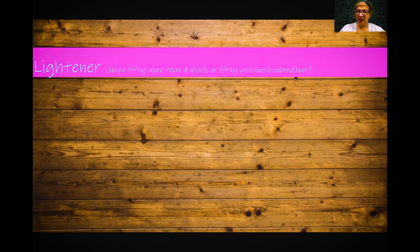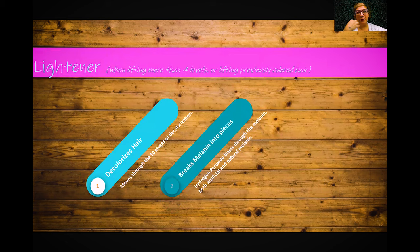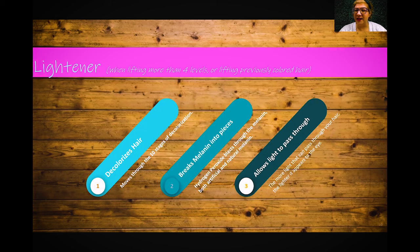When you're lifting more than four levels — even on virgin hair — you're going to have to use a lightener. If it's been previously colored, if the hair is dark, or if you're going more than four levels, you need a lightener. Lightener decolorizes the hair — it moves through the 10 levels of decolorization, breaks the melanin into pieces so that light can pass through. The more light that can pass through, the lighter it appears to our eyes.